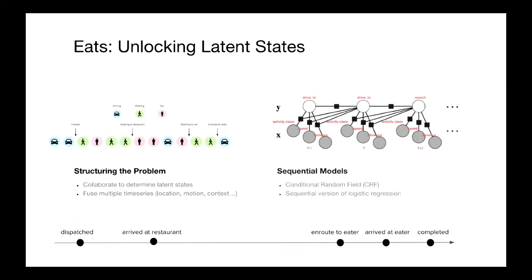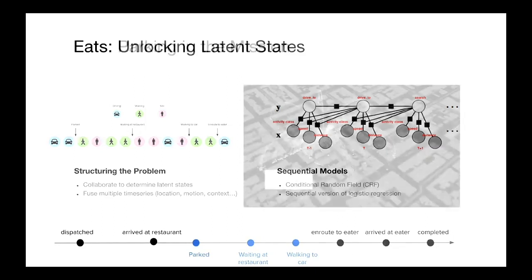In this case, we use one of our sequential models. We're actually able to get away with a pretty simple one. It's a conditional random field, which is essentially a sequential version of a logistic regression. We can look at the whole structure of atomic states and then infer the most likely change points based on the behaviors. We're able here to figure out when and where the courier parks, how long it takes them to walk to the restaurant, dwell time in the restaurant, when they begin walking back out. That allows us to paint a much richer picture of the world.